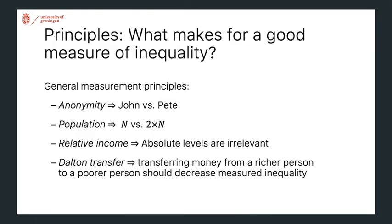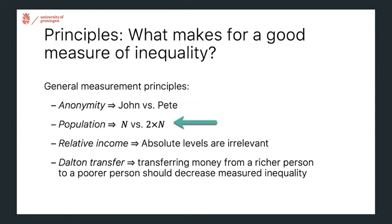It's helpful to keep in mind what are good principles for a measure of inequality. Any measure that satisfies these four measurement principles can be called a good measure of inequality in a population. First, a measure should be anonymous — it shouldn't matter whether John has more income or Pete. Second, it shouldn't matter how large the population is, so if you double the population, a measure of inequality should not change.